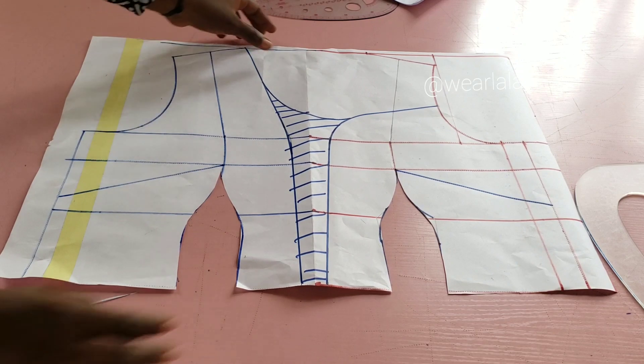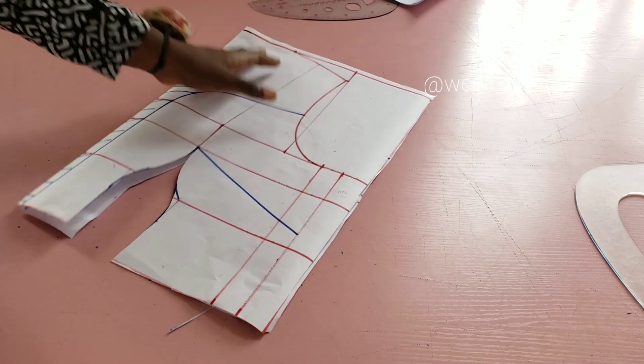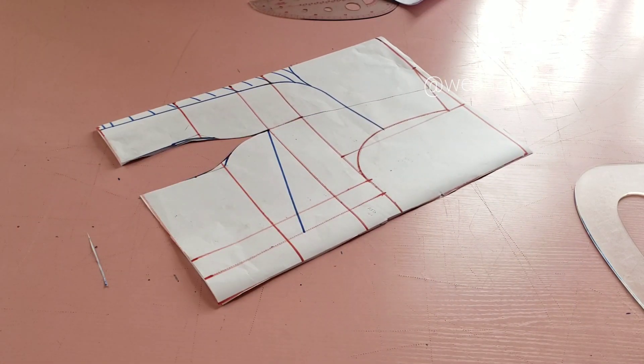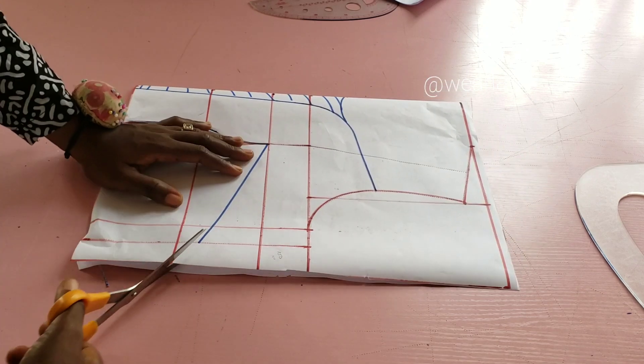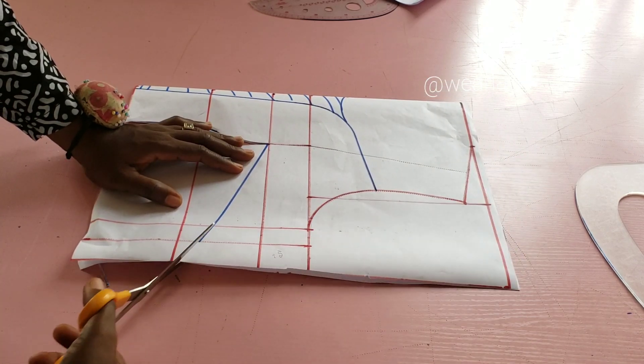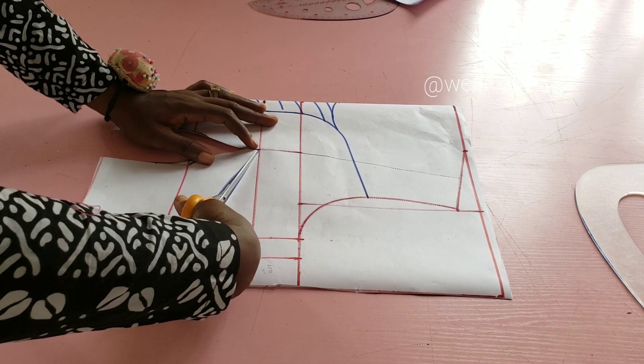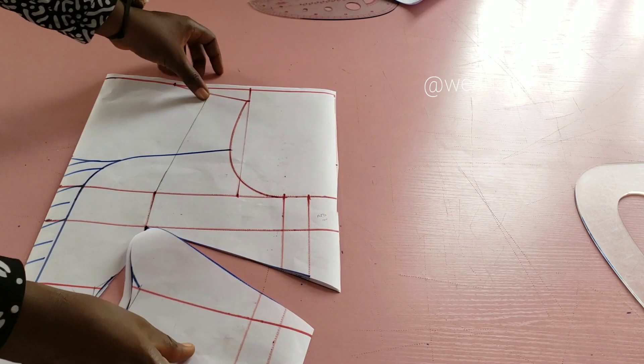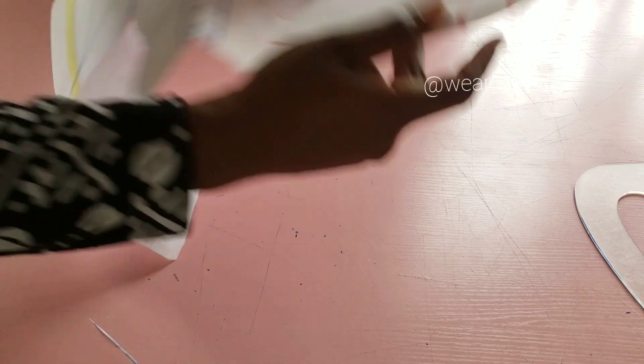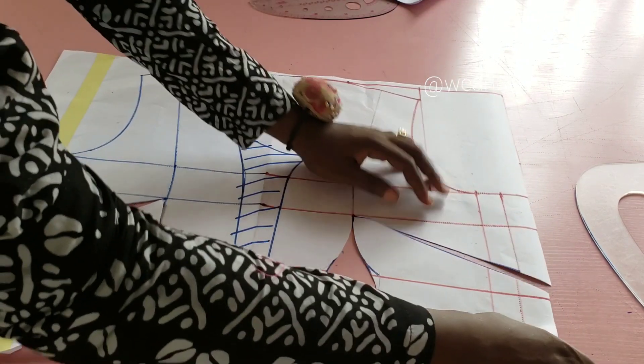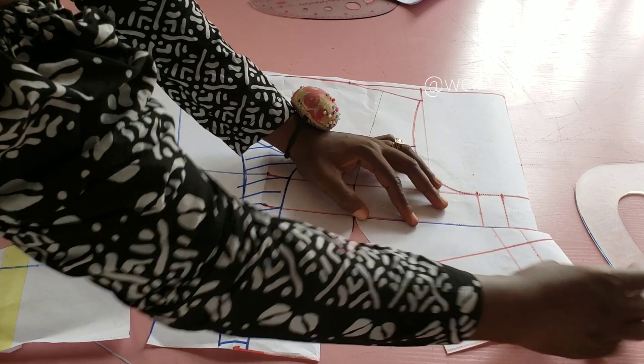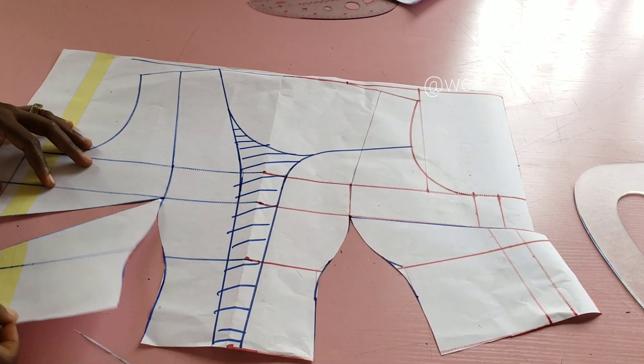So I'm done cutting out the waist dart. Now I want to also cut out the bust dart. If you watch the basic bodice tutorial you should know that we've done this before. You need to close the bust dart. I'll just fold and then I'll use my masking tape to close it.